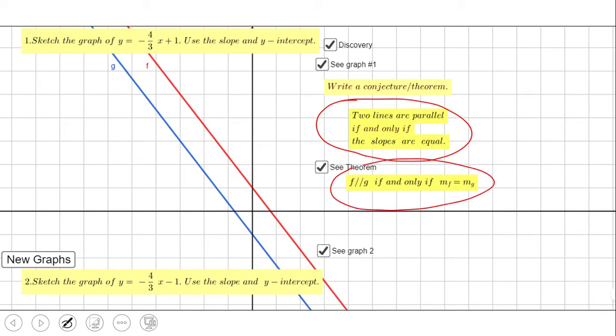You can always click 'New Graphs' to see more choices of parallel lines, and you'll notice the slope is the same. In this case, the slope is negative four-thirds. Don't forget, this discovery is on GeoGebra.org.